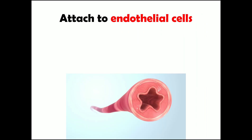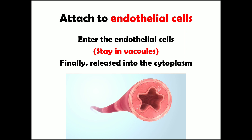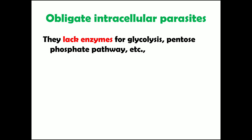Once the bacteria complete multiplying in the local lymph nodes, they are released into the bloodstream. In the bloodstream, the bacteria attach to endothelial cells — the inner lining of blood vessels — enter them, and stay inside vacuoles. They then release enzymes such as phospholipase A, destroy the vacuoles, and are released free into the cytoplasm. Since these bacteria lack enzymes for glycolysis, the pentose phosphate pathway, and other metabolic pathways, they depend entirely on the host cell for nutrition — making them obligate intracellular parasites.